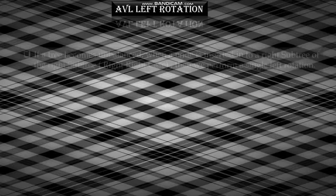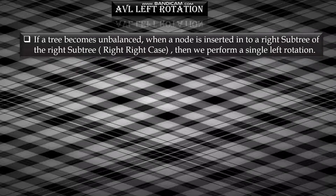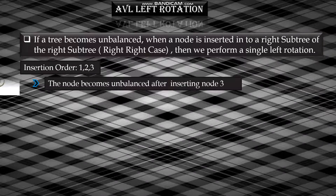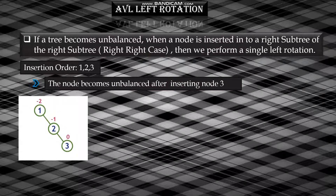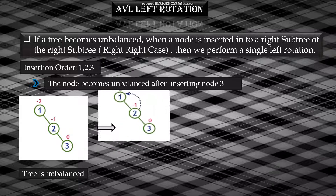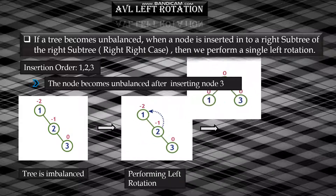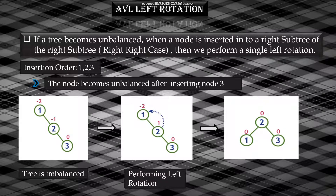AVL left rotation: if a tree becomes unbalanced when a node is inserted into the right subtree of the right subtree — i.e., the right-right case — then we perform a single left rotation. For example, taking the insertion order as 1, 2, and 3: first we insert 1 as the root node, then 2 as the right subtree of 1. The tree is still balanced. The tree becomes unbalanced after inserting node 3, because the balance factor of 1 is -2. So we perform a left rotation — 1 becomes the left subtree of 2. Now the tree is balanced because the balance factor of each node is 0.